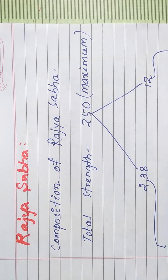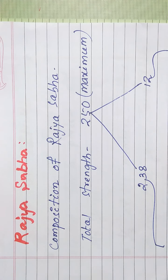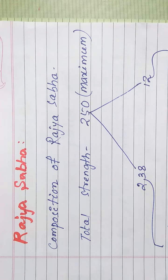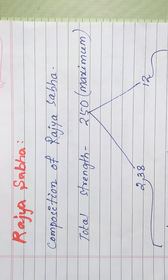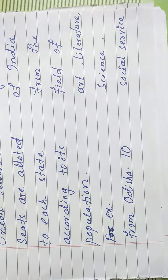Now, we will discuss Rajya Sabha. What is the composition of Rajya Sabha? 250 members are there in the Rajya Sabha, out of which 238 members represent the states and the union territories. Seats are allotted to each state according to its population. For example, from Odisha, 10 members are elected to the Rajya Sabha.